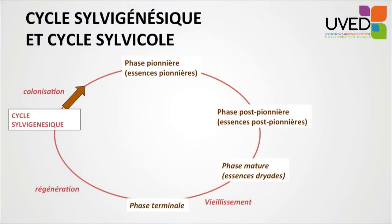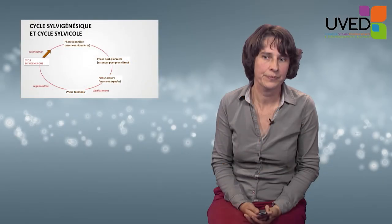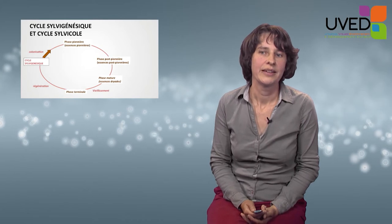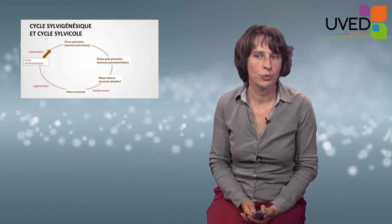In the normal forest cycle, in the absence of any disrupting factors, the pioneer, post-pioneer, mature, and terminal phases will alternate. In the terminal phases, very large trees will die and fall down, leaving a hole unoccupied in the forest. Regeneration will start in this open space and the cycle starts all over again.